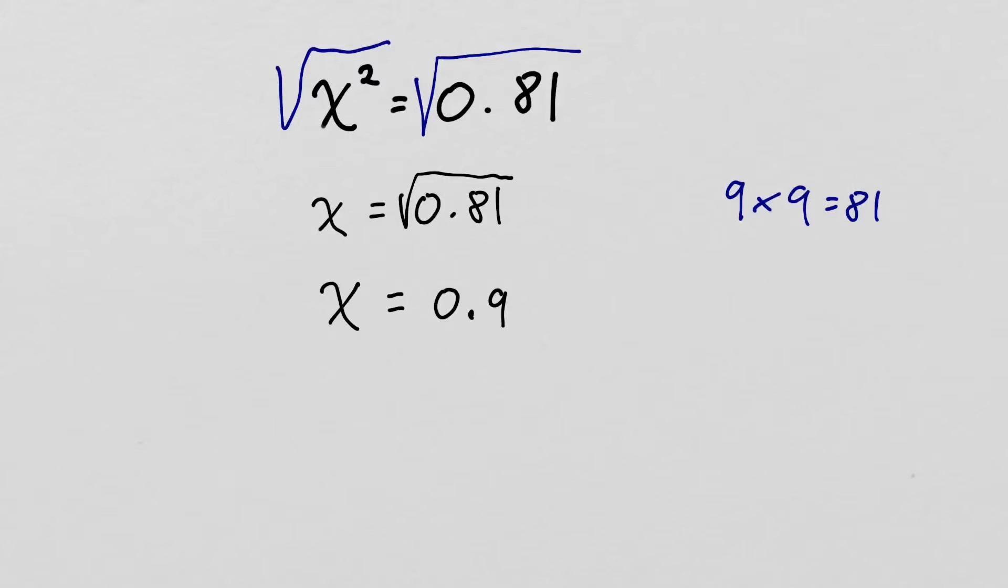Well, it turns out that the square root of 0.81 follows the same rules. So you will just get 0.9. Now, if you're not sure how that works, you can try multiplying it out on the side. 0.9 times 0.9, well, 9 times 9 is 81.